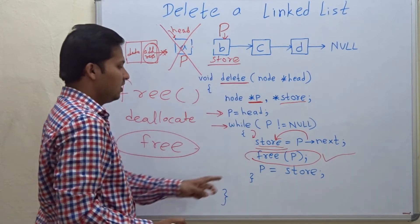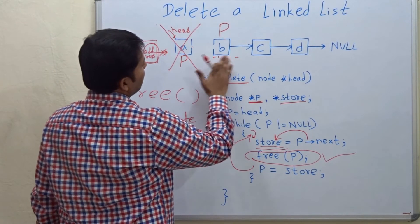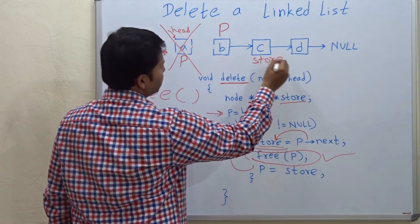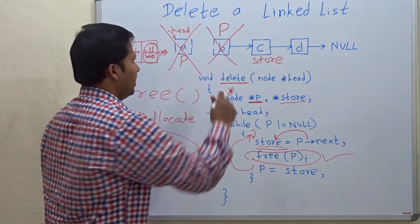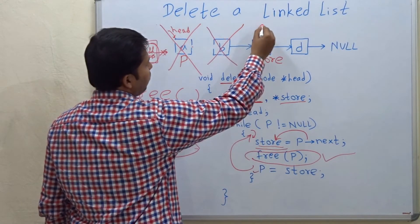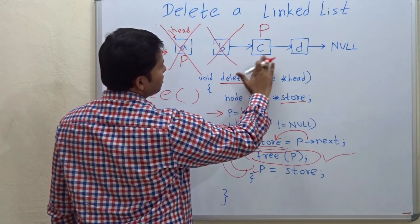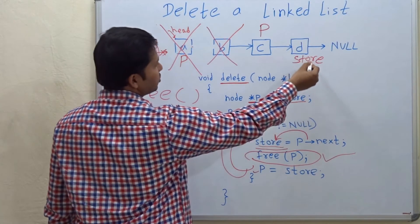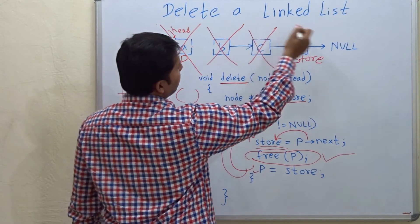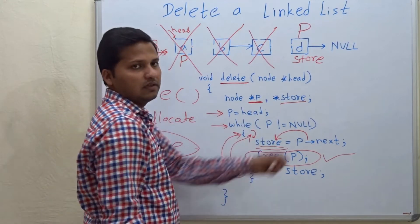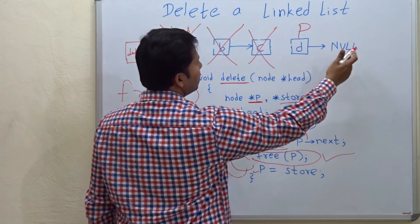Now p is at node B. In the next iteration of the while loop, the current node is p, and store will hold the address of the next node. After store holds that address, we delete p. Then p is assigned store again, moving ahead. Before deleting node C, store holds the address of the next node, we delete p, and p moves to node D. Before deleting D, store holds the address of the next node.